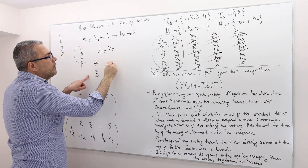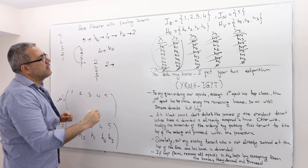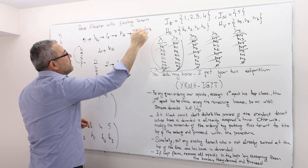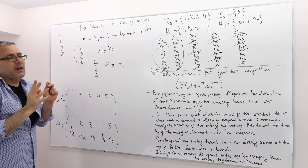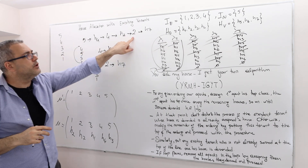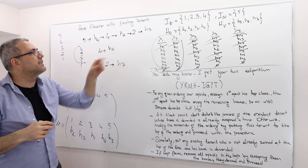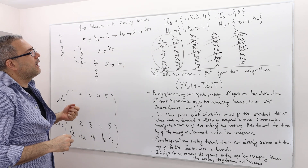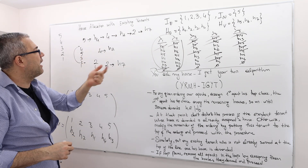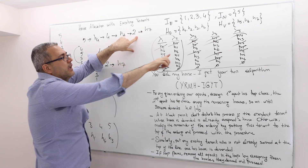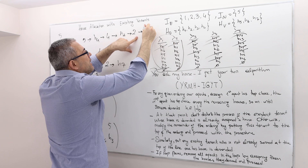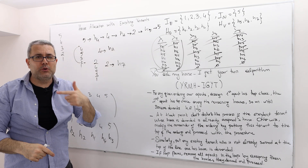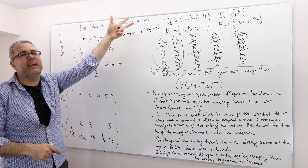We ask agent 2: what house do you like? He says house 7. So there's no loop here because agent 2 demands a vacant house. If his first choice had been house 5 instead, that would form a loop, since H5 belongs to agent 5 — and we'd take everyone out of that loop by matching agent 5 to H4, agent 4 to H2, and agent 2 to H5.